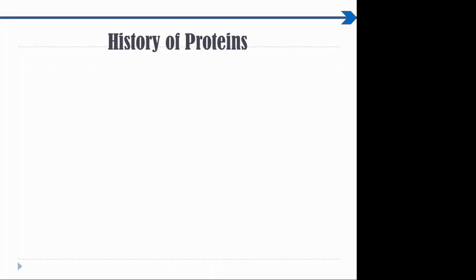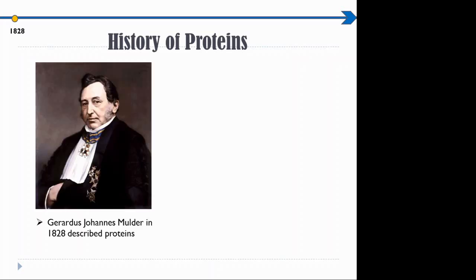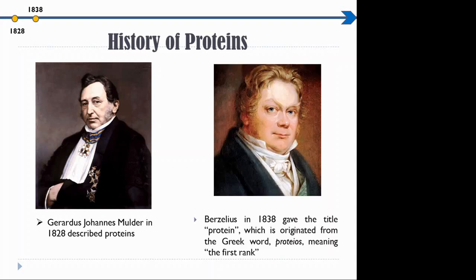The history of proteins begins in 1828. Gerardus Johnson Mulder, a Dutch chemist, described proteins by conducting elementary analysis and determined that all proteins share the same or similar empirical formula. In 1838, John Jacob Berzelius, a Swedish chemist, proposed the name proteins, derived from the Greek word proteos meaning primary importance or first rank.